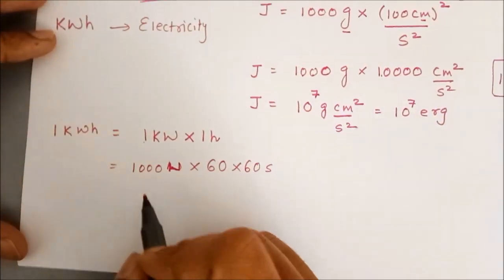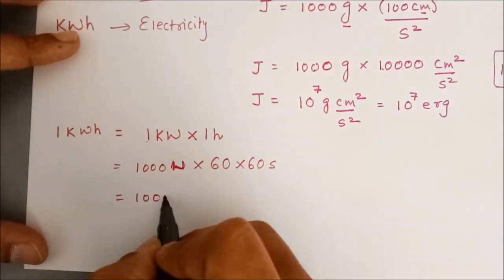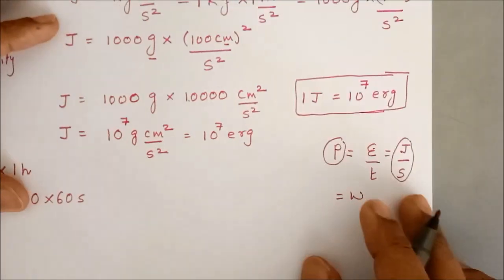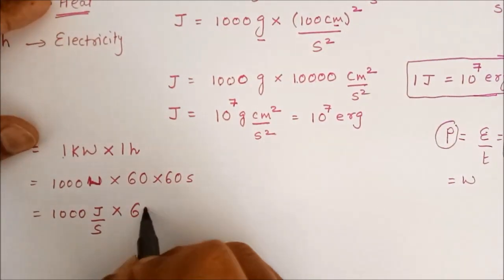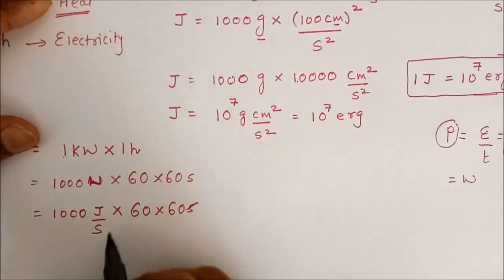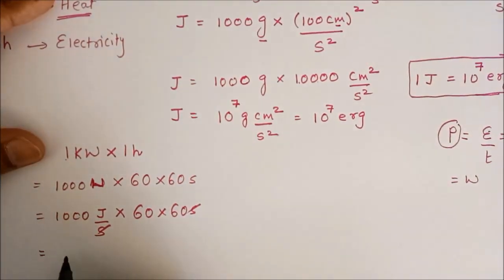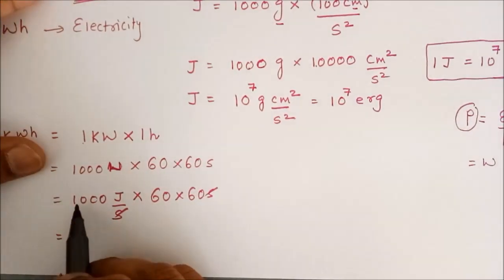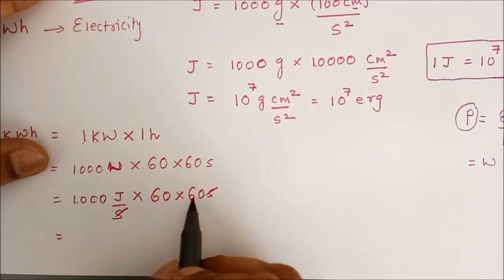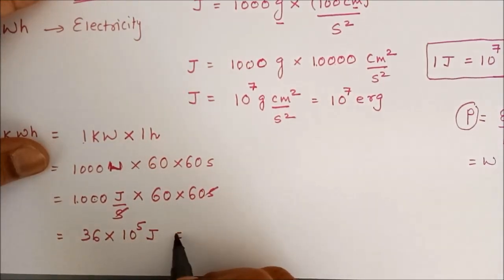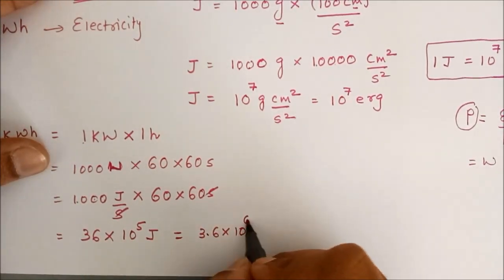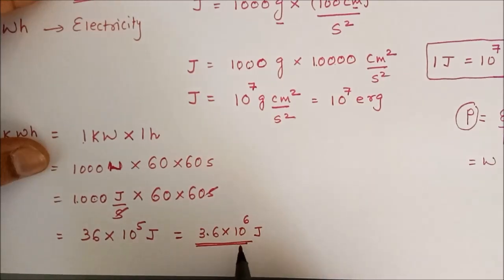I may choose to write down here, Watt as Joule per second as we have already seen it over here. Now, multiply by 60 into 60 second, second second cancels and then I have here as 36 into 10 raised to 5, that is Joule, you may write down this as 3.6 into 10 raised to 6 Joule as it is more dimensionally correct.